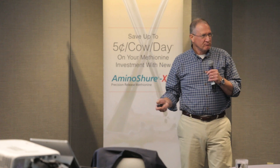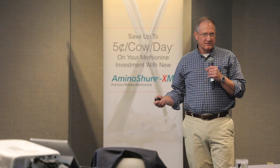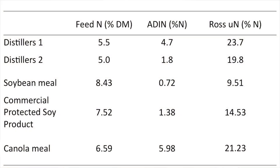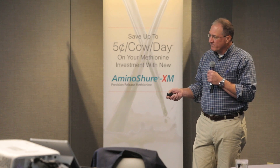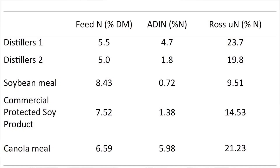So there is some variability. If there's another feed about as variable as blood meal, it's probably distillers. Another soybean meal: ADIN at 0.72, 9.5% indigestible. Here's a commercially protected product — can't use the name — ADIN at 1.38, indigestible through the assay at 14.5%. Canola meal: ADIN at 5.98, 21% indigestible. That's a little bit higher than some canola meal, but not that far off.